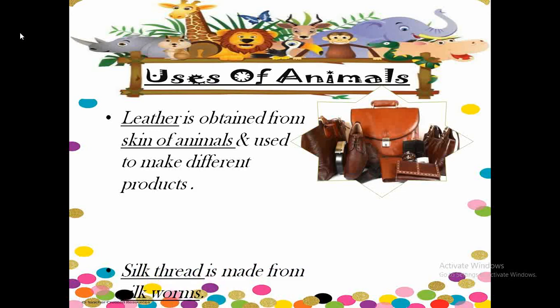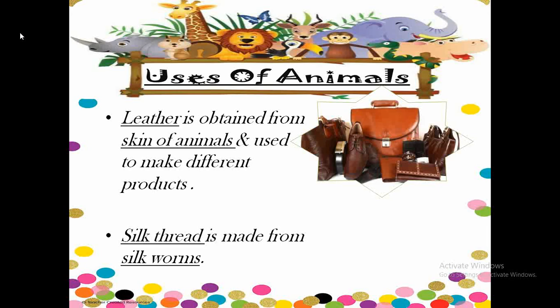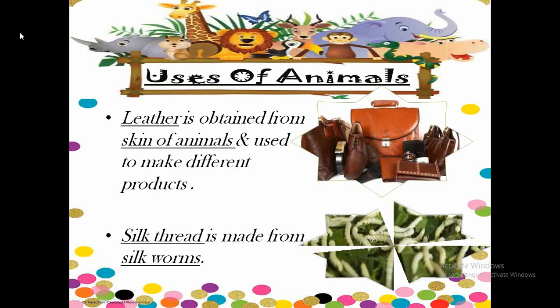Silk thread is made from silkworms. Silk is used to make clothes like sarees, dupattas, kurtas, etc. The process of rearing silkworms to obtain silk is called sericulture. For obtaining silk, cocoons are collected and then boiled to separate the silk fiber from them.